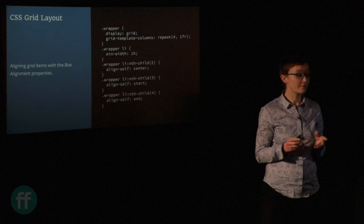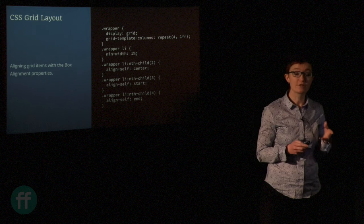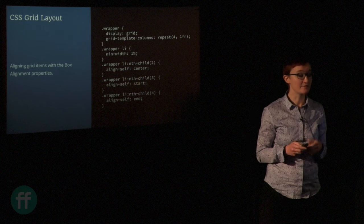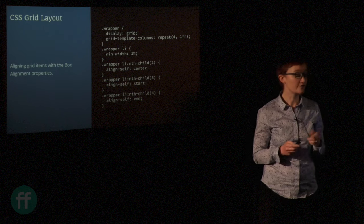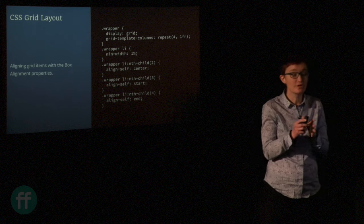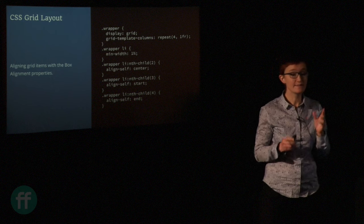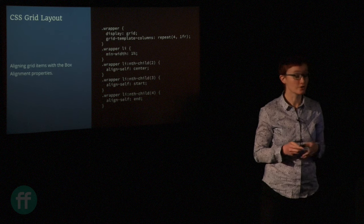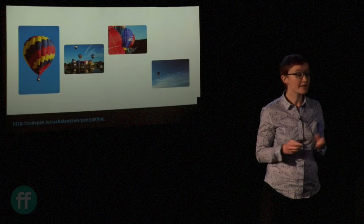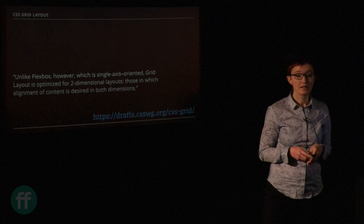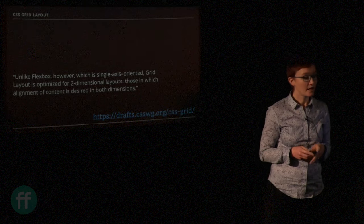This is the same four-image example I created as a flex layout, now as a grid layout. I'm using grid-template-columns, saying repeat four times one fraction unit. This fr unit is a fantastic unit — it allows us to distribute available space. We're splitting the available space in the grid container into four and sharing it out equally because they all have one fraction unit of space, giving us the same layout as the flex layout, this time using CSS Grid.